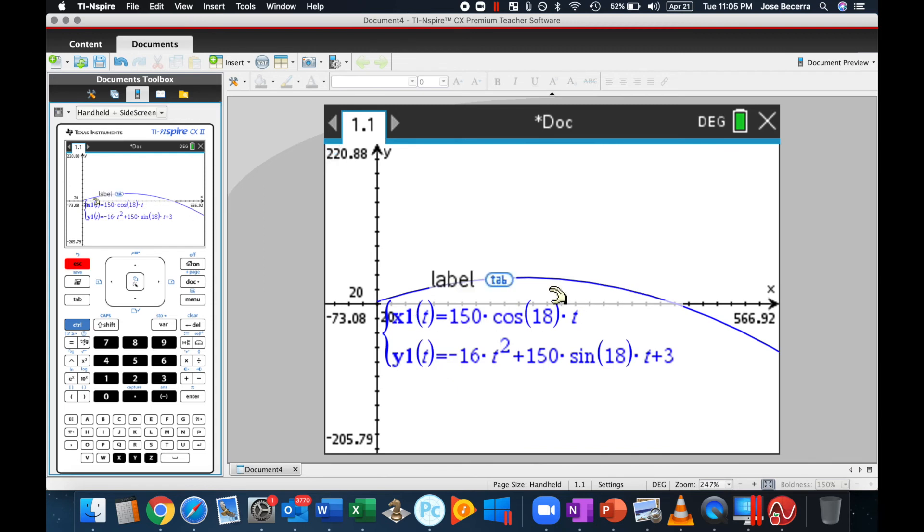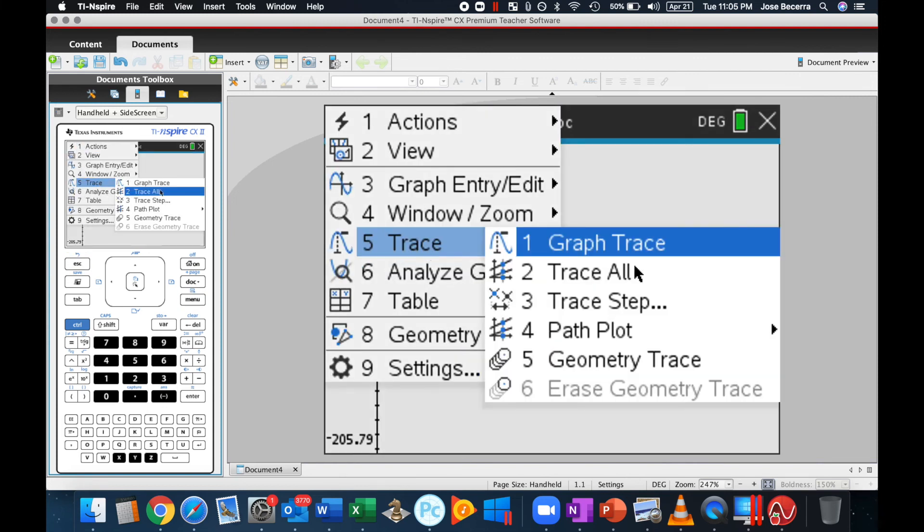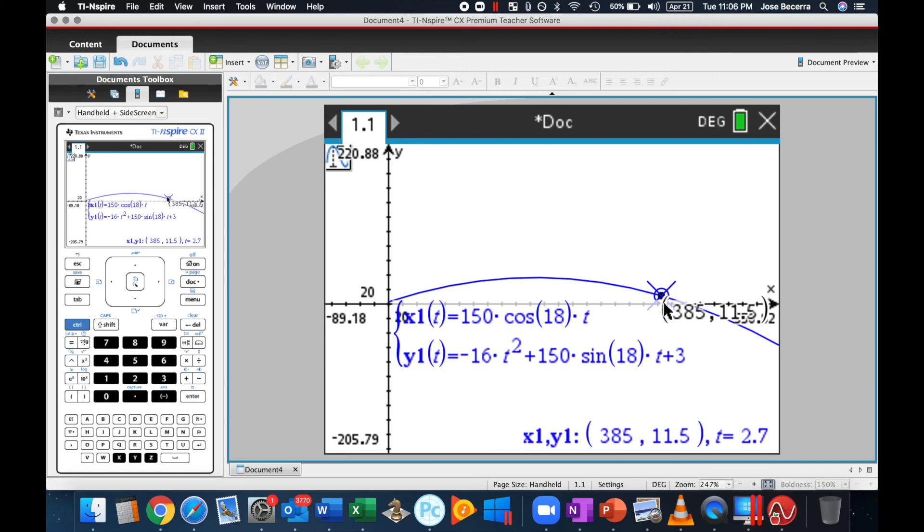My question that I had before was, will this be able to clear the 20 foot wall when it is 400 feet, that is 400 feet away? So, I guess a couple of things that we need to know is, well, where is it going to be when it is 400 feet away? I really don't think it's going to go ahead and clear that.